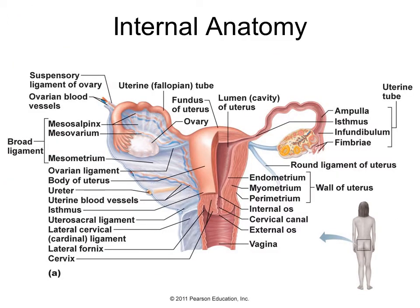Looking at the internal anatomy from the side view, you have two ovaries. They are held in place by ligaments. The uterus, the ovaries, and the uterine tubes are all secured in place by various ligaments.